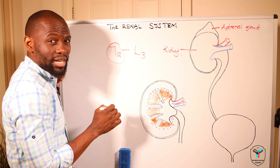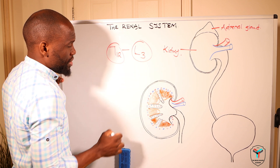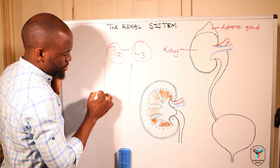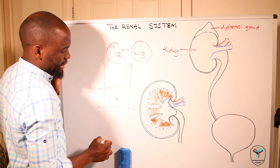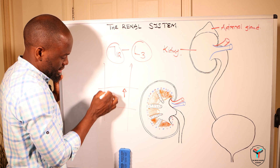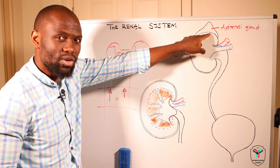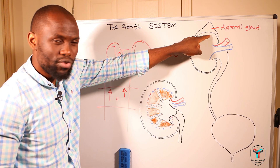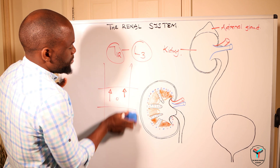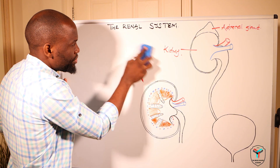Their location in relation to the vertebrae is around T12 to about L3 — that is the thoracic vertebra number 12 to about the third lumbar vertebra. You're going to find them in the upper abdominal quadrants, and the apex or superior pole of each kidney points more towards the spine.